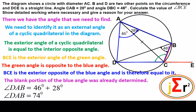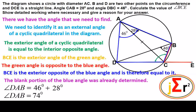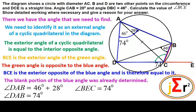DAB, the large blue angle, is 74 degrees. Since BCE is equal to DAB as the exterior opposite of a cyclic quadrilateral, BCE is also equal to 74 degrees. This confirms the property: the interior angle of a cyclic quadrilateral equals the exterior opposite angle.